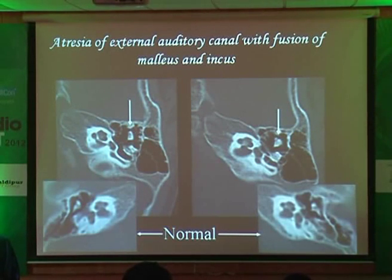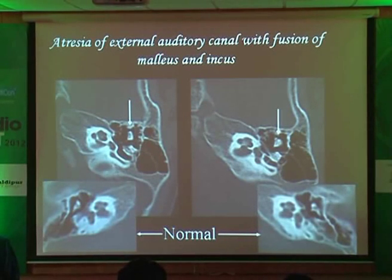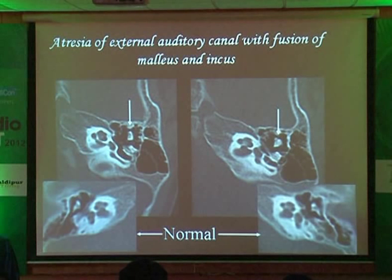When you see the incus in the ice cream cone appearance, you are in the epitympanum. Because the moment you come down into the mesotympanum, you don't see the ice cream cone appearance — you just see two dots or two lines. Two dots or two lines: mesotympanum. Ice cream cone: epitympanum. Hypotympanum is empty — you do not see any structure except air within the hypotympanum.